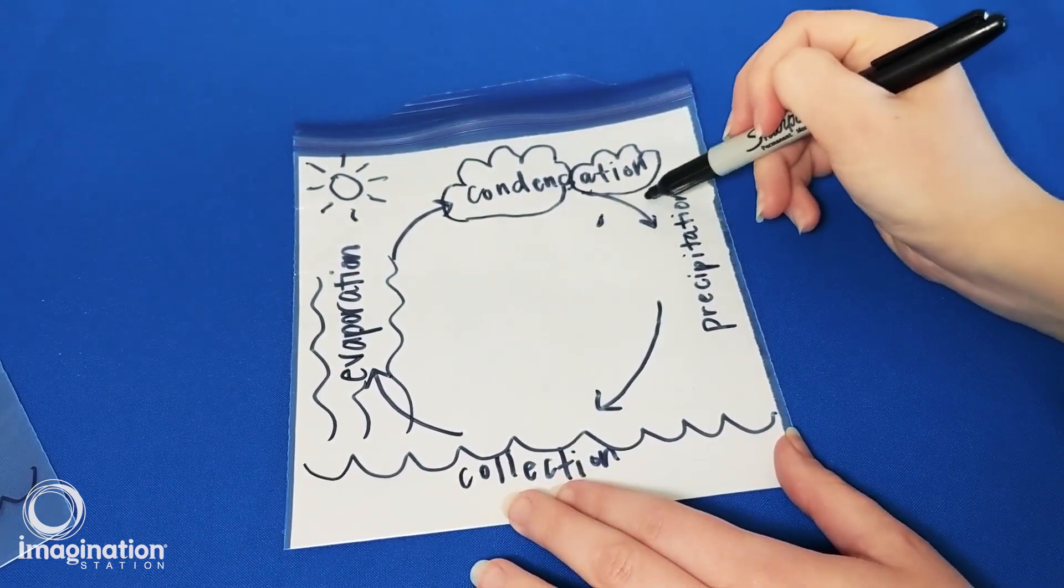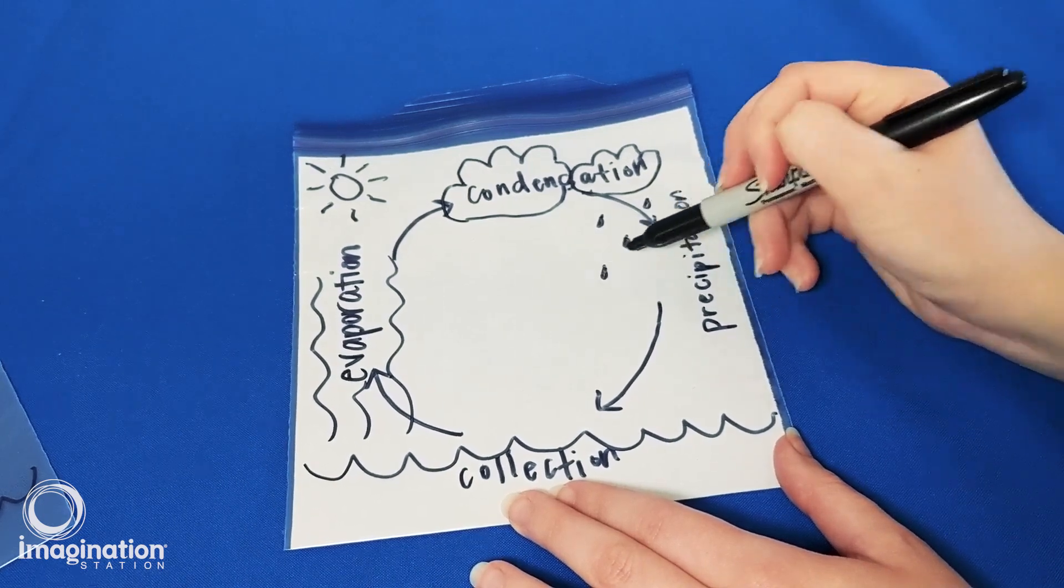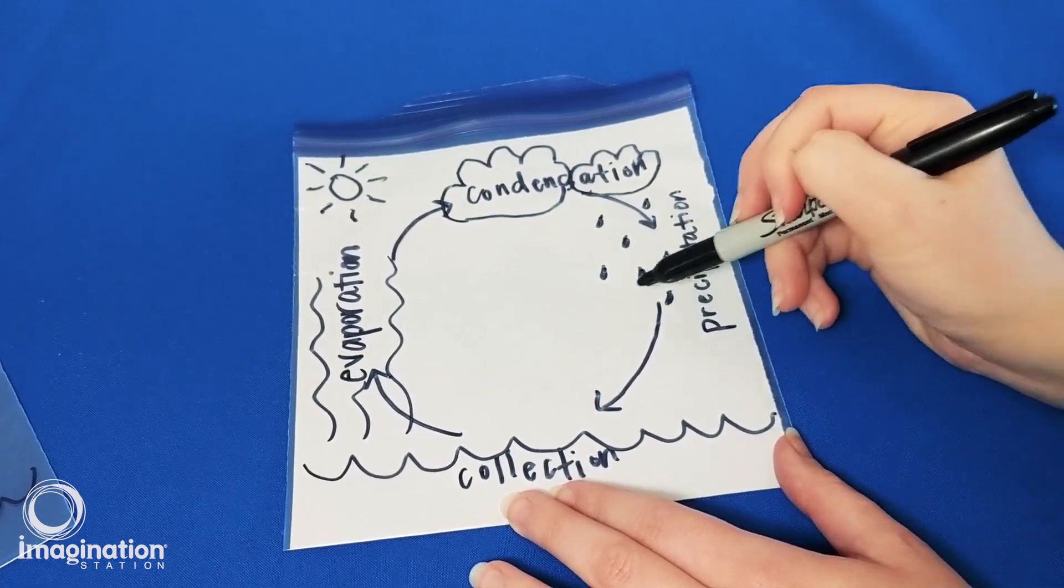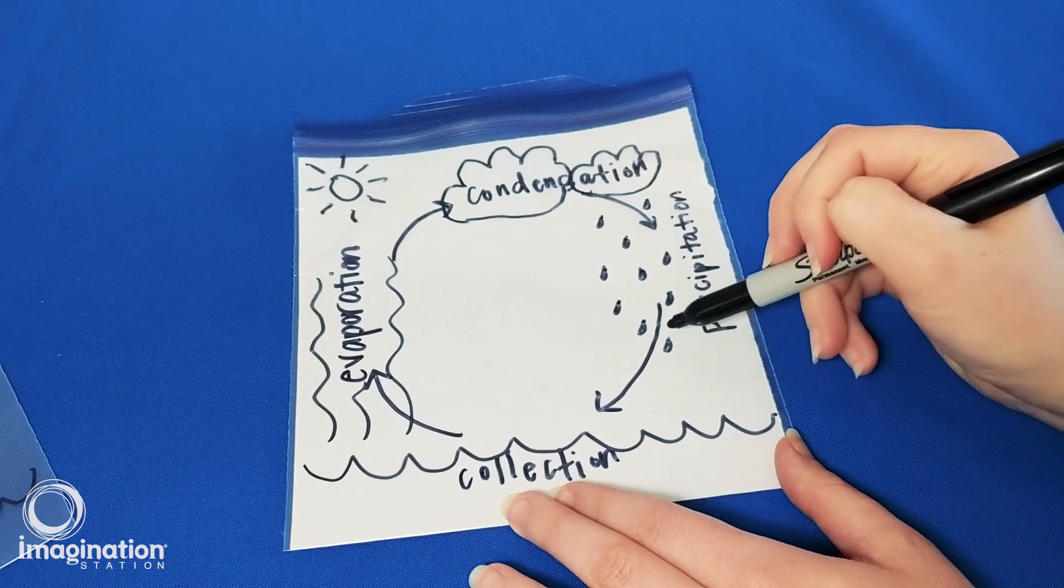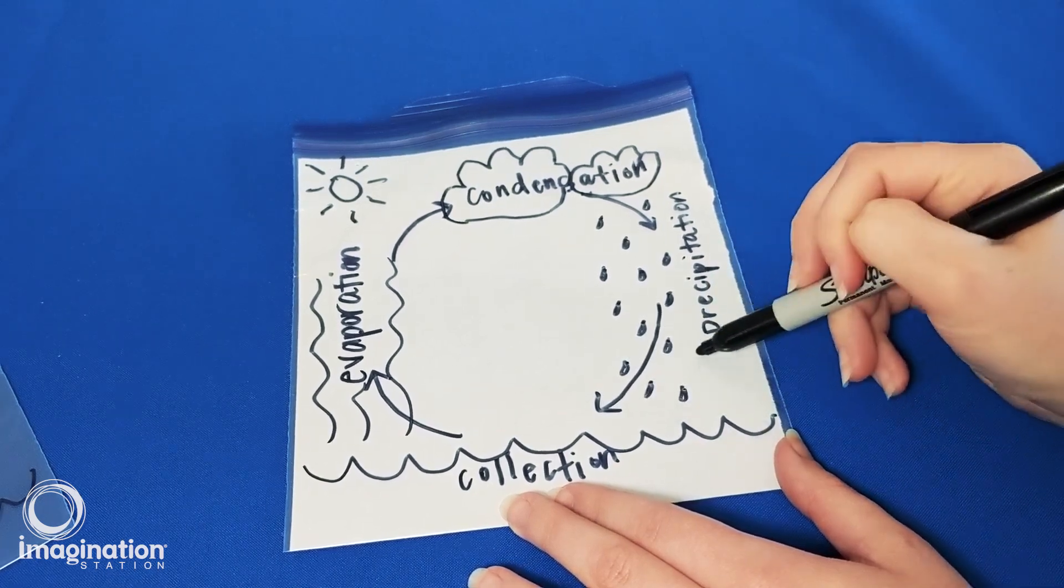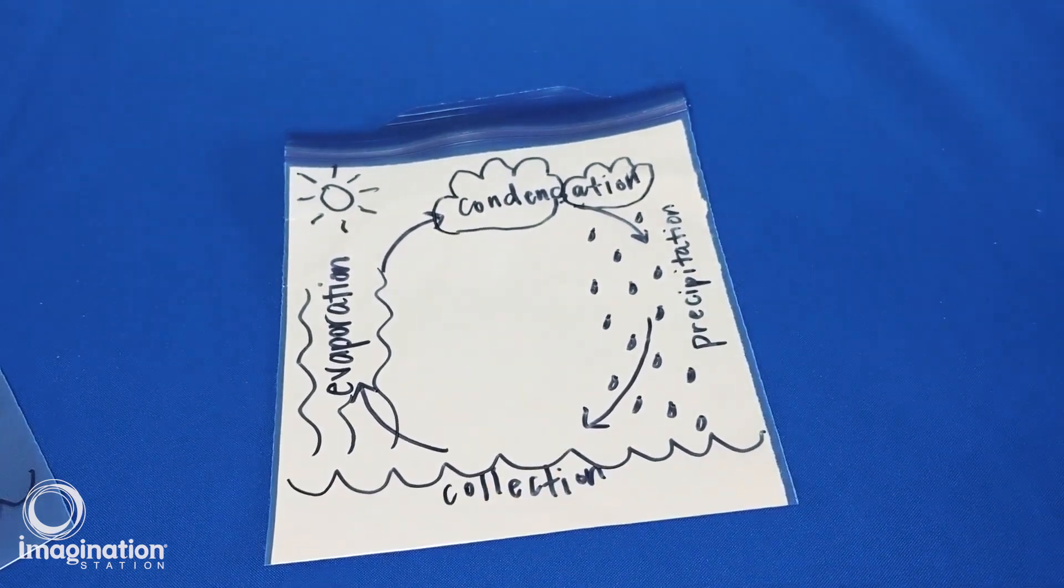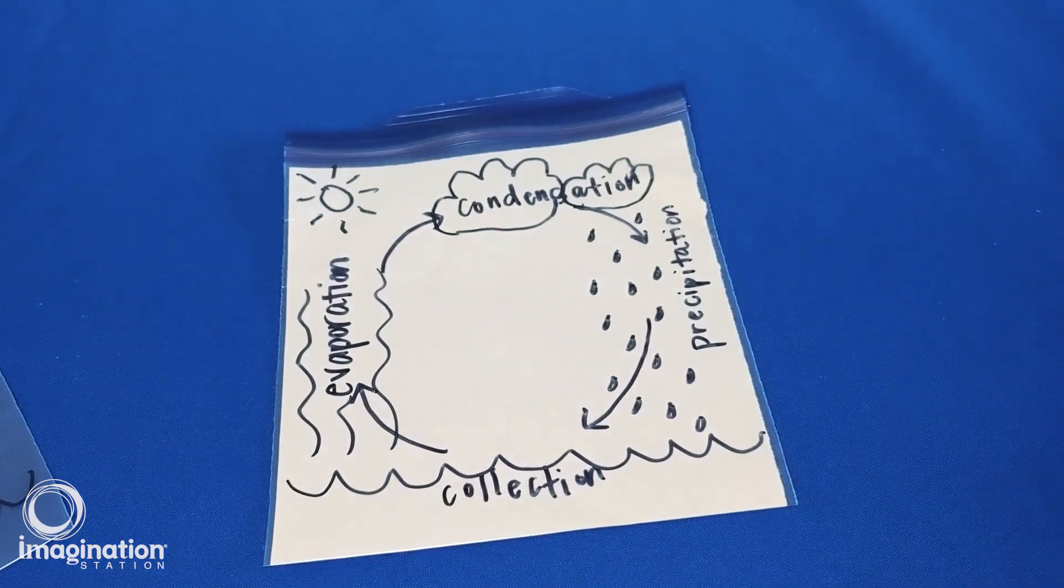Every water cycle bag doesn't have to look exactly the same. Create your own representation of the water cycle by writing and drawing something to help you remember each step: evaporation, condensation, precipitation, and collection.